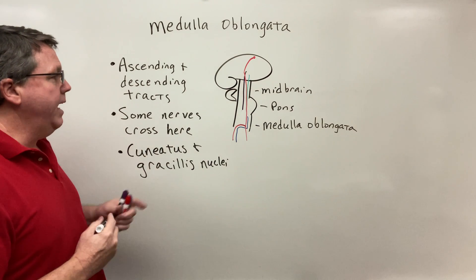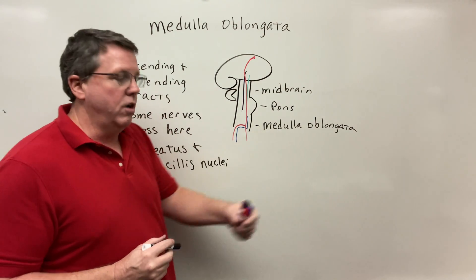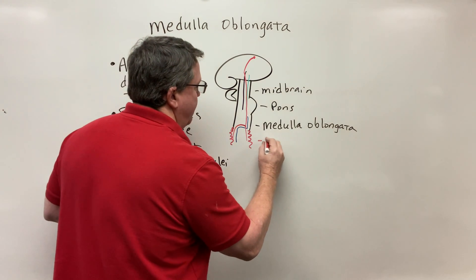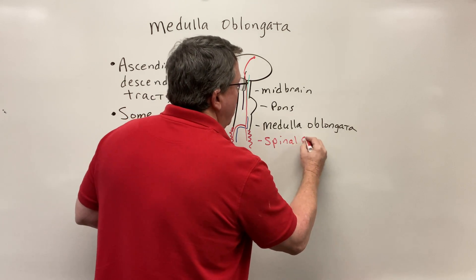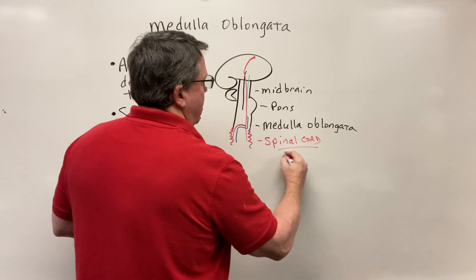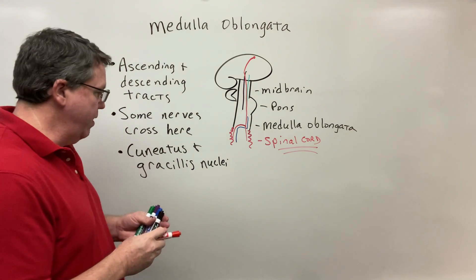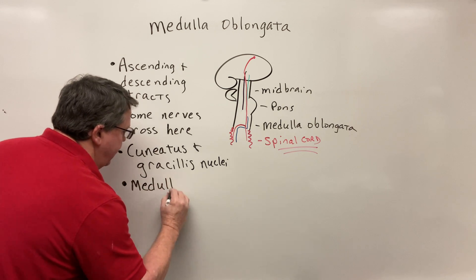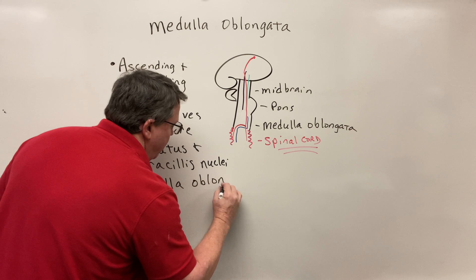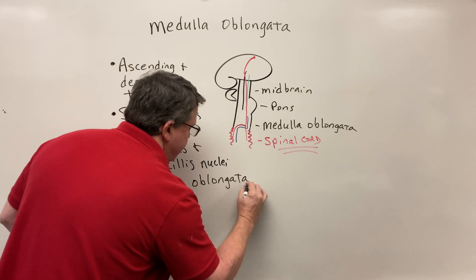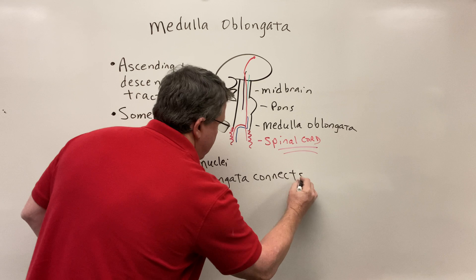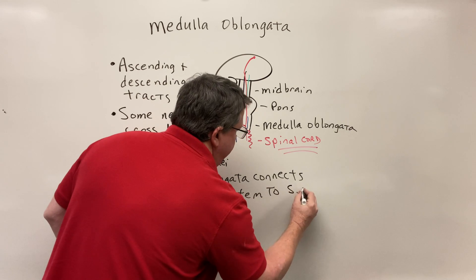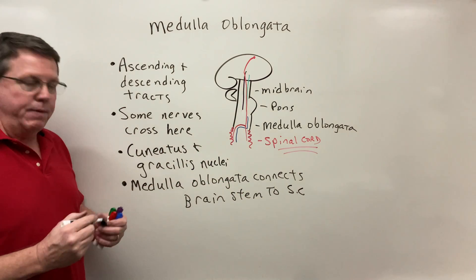The medulla oblongata is also basically where the brainstem attaches to the spinal cord. There's no clear distinguishing marker that tells you exactly where the transition occurs — it's a gradual transition. So we say the medulla oblongata connects the brainstem to the spinal cord.